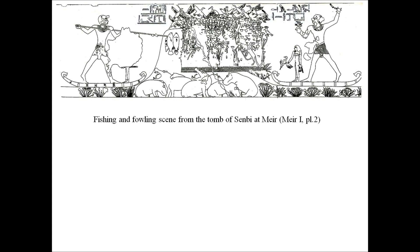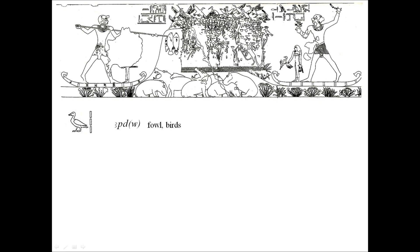Two things to remember: the words for bird and fish are given in abbreviated form rather than being written out fully — they are still the same two words in the plural. Ma'e h'ruh, the justified, has now been given in three different writings; such variations will be explained in the next lesson. The word apidu, recognized from previous lessons, is shorter and simpler, using only the determinative for duck and the three strokes indicating plural. The preposition in, meaning by, is followed by ma'e h'ruh, the justified, here written in two different forms.